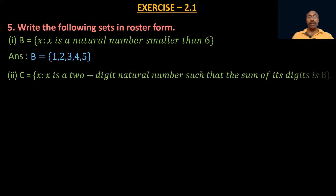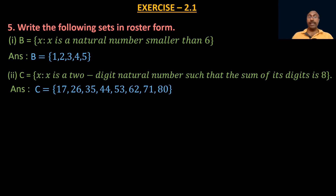Second: C = {x : x is a two-digit natural number such that the sum of its digits is 8}. If the first digit is 1, the second is 7; if the first digit is 2, the second is 6, and so on. So C = {17, 26, 35, 44, 53, 62, 71, 80}, because in all these numbers the sum of the two digits equals 8.